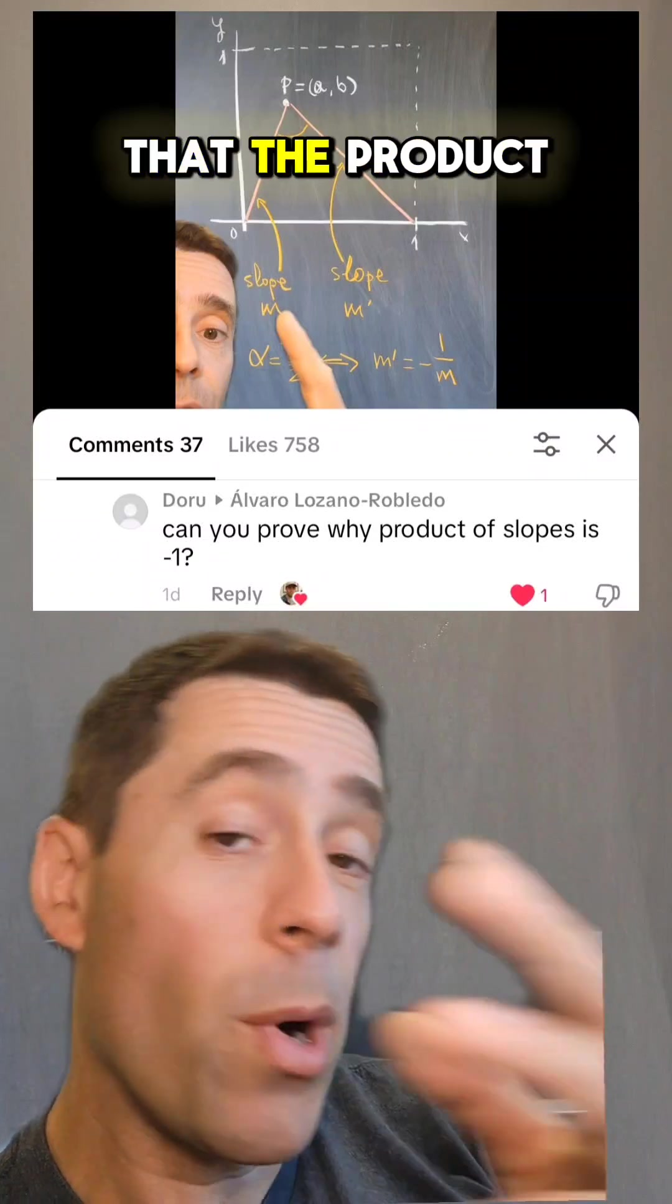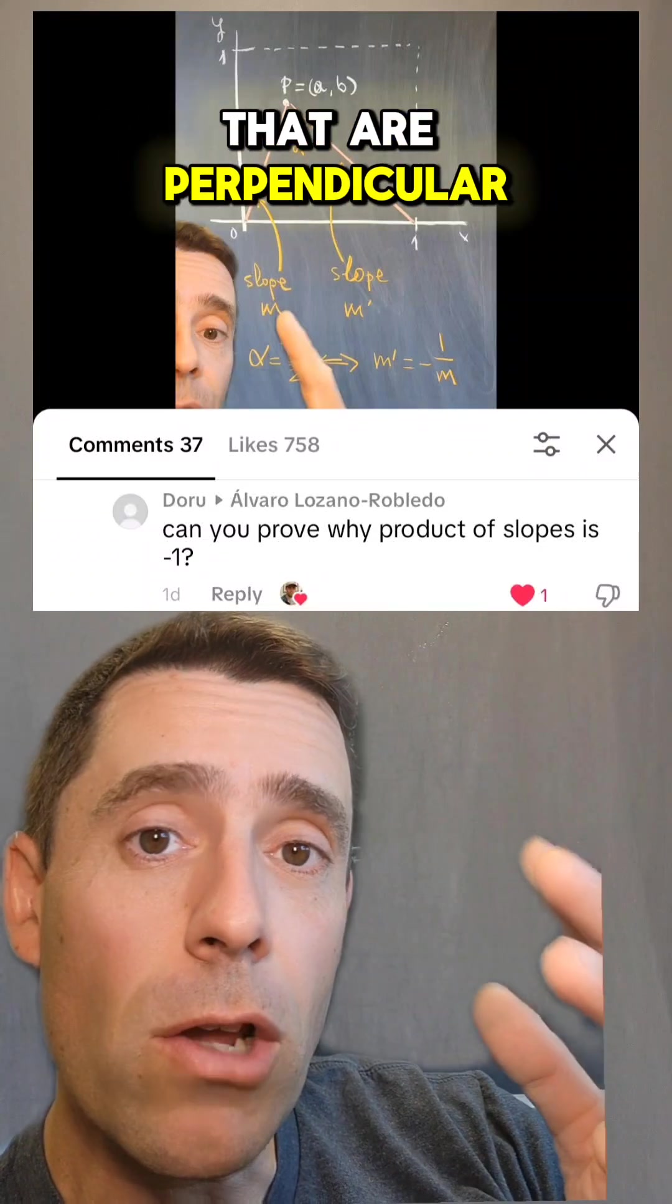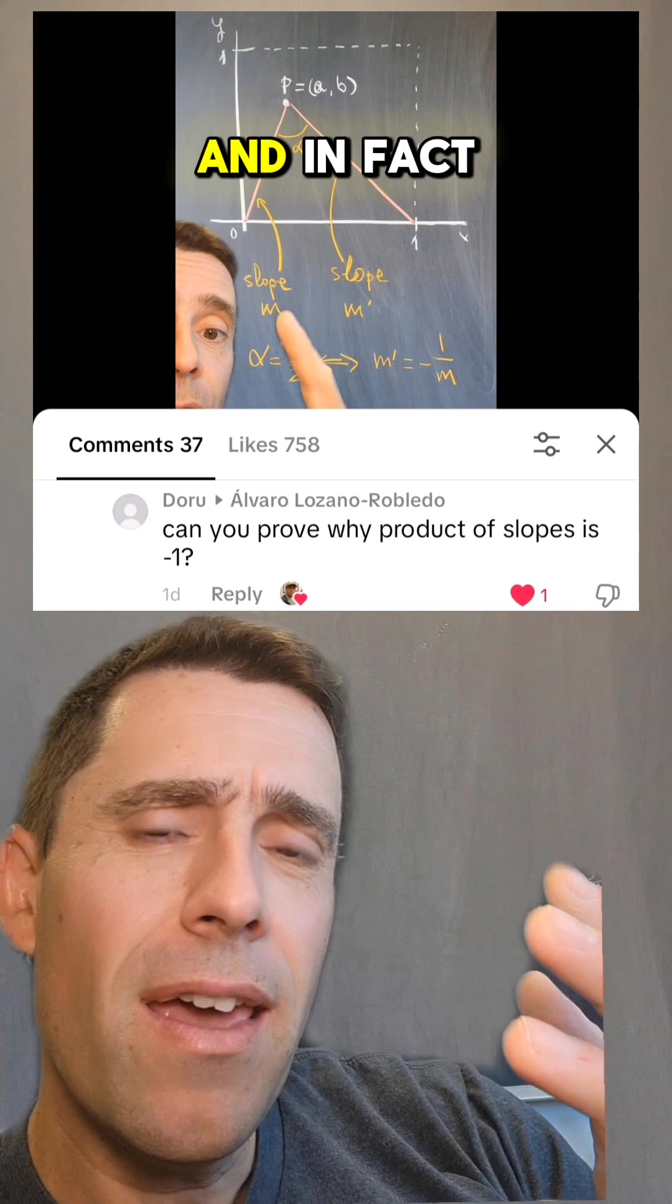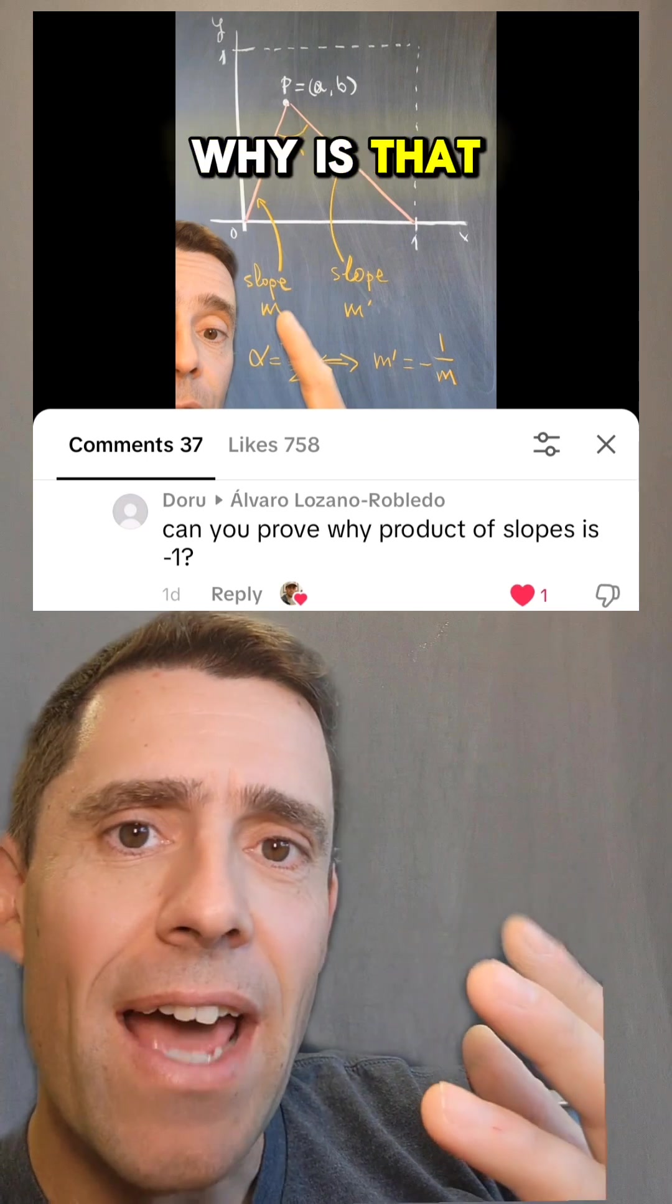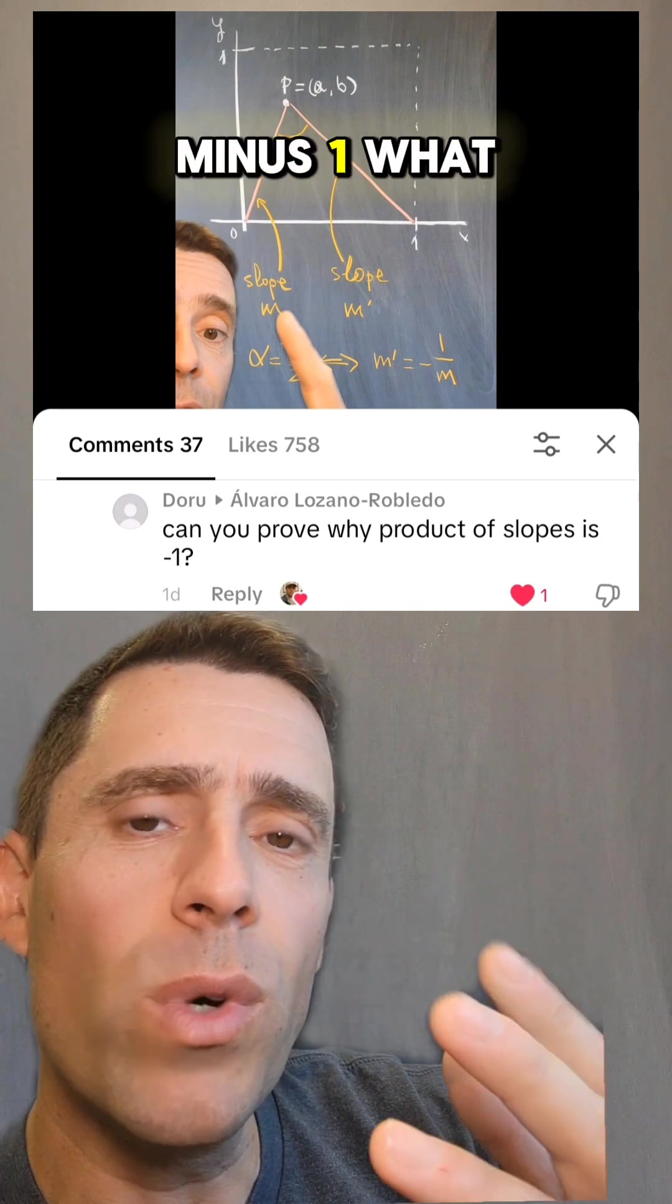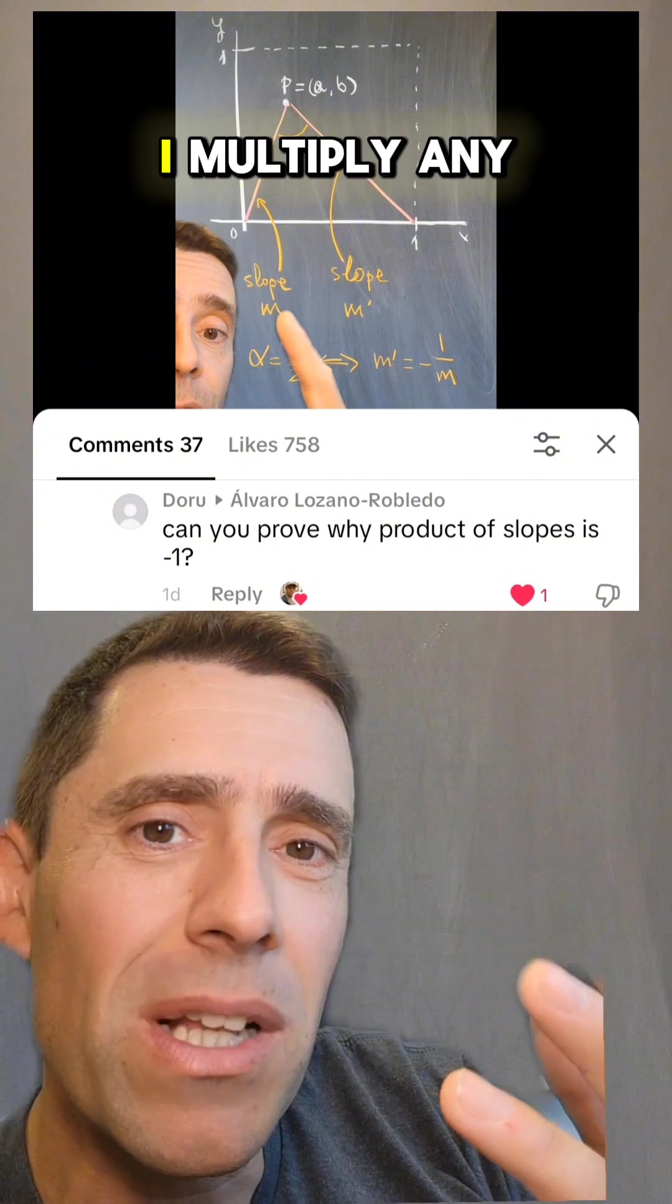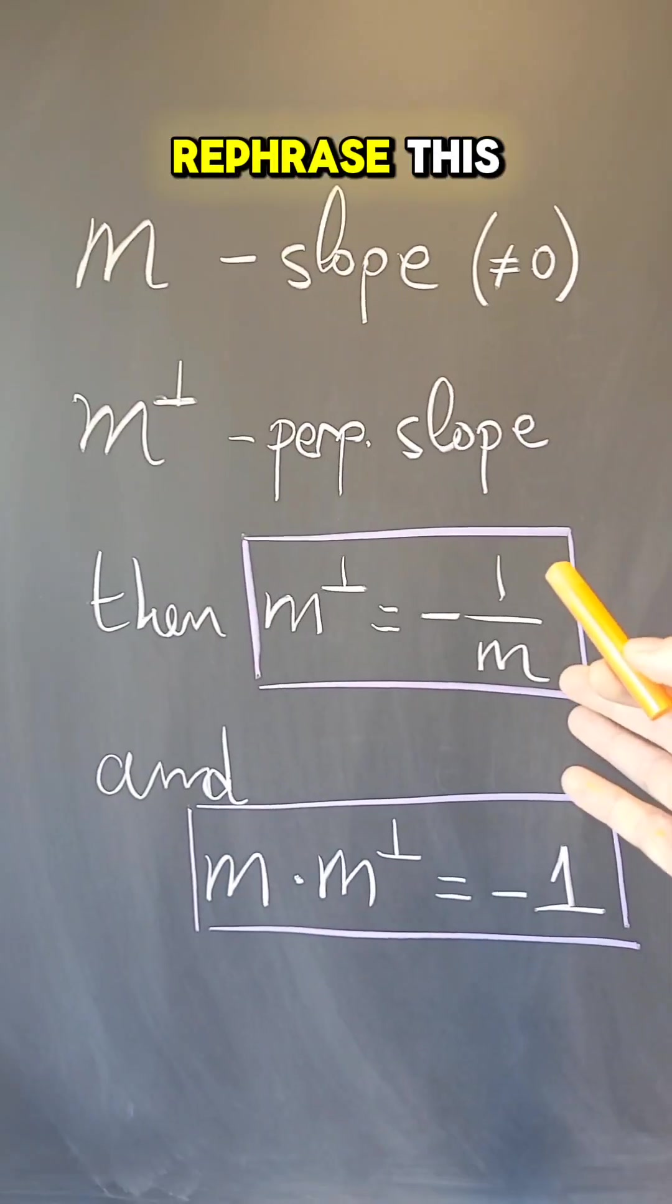I love this question. Can you prove that the product of two slopes that are perpendicular is minus one? Why is that? What is this minus one? What does it represent? What happens if I multiply any two slopes? What do I get? Let me rephrase this.